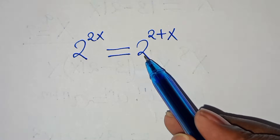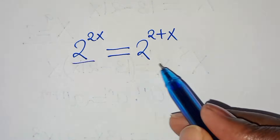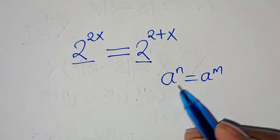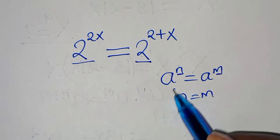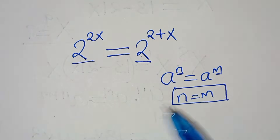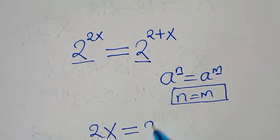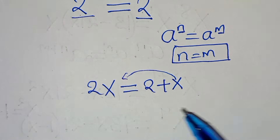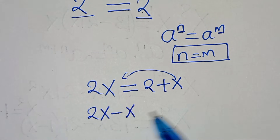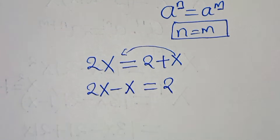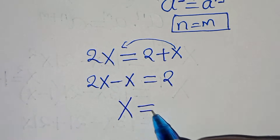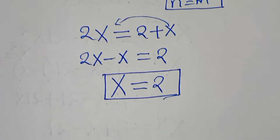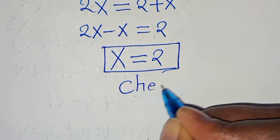Now we have 2 to the power of 2x equal to 2 to the power of 2 plus x. Since again the bases are common — a to the power of n equals a to the power of m implies n equals m — we get 2x equals 2 plus x. Taking x to the left-hand side: 2x minus x equals 2, so x equals 2. That is the value of x.